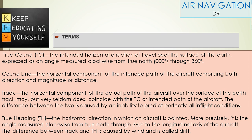Course Line: The horizontal component of the intended path of the aircraft comprising both direction and magnitude, i.e. distance.